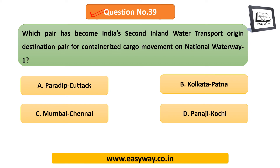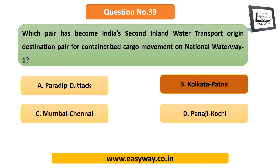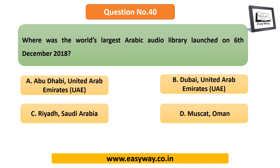Question 39: Which pair has become India's second inland water transport origin-destination pair for containerized cargo movement on National Waterway 1? We are talking about connectivity through waterways. The answer is the Kolkata–Patna pair.